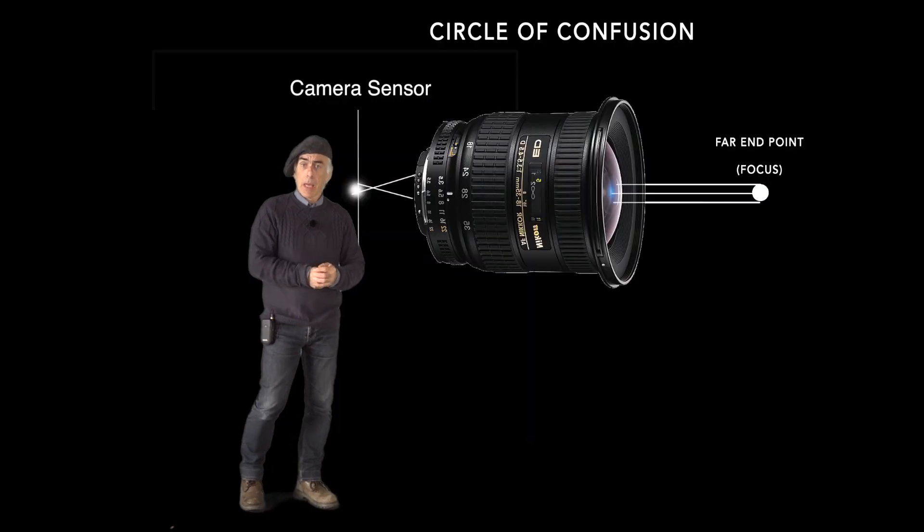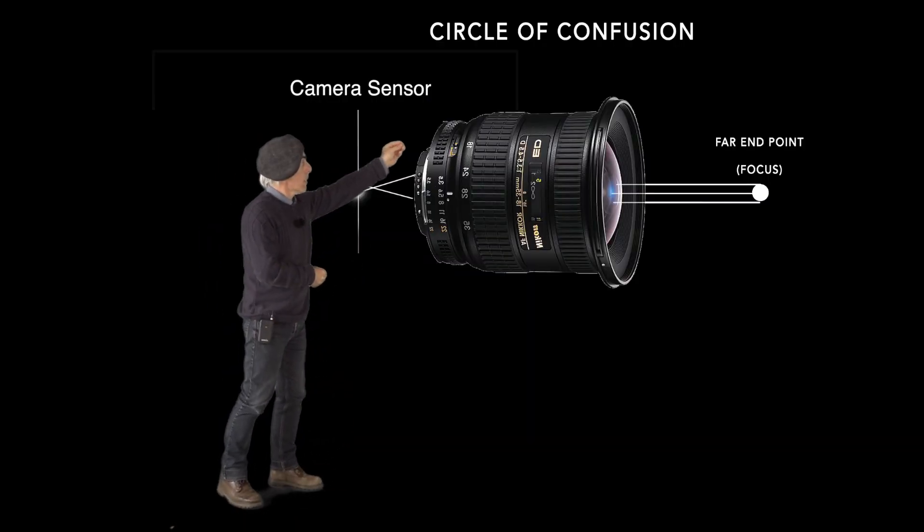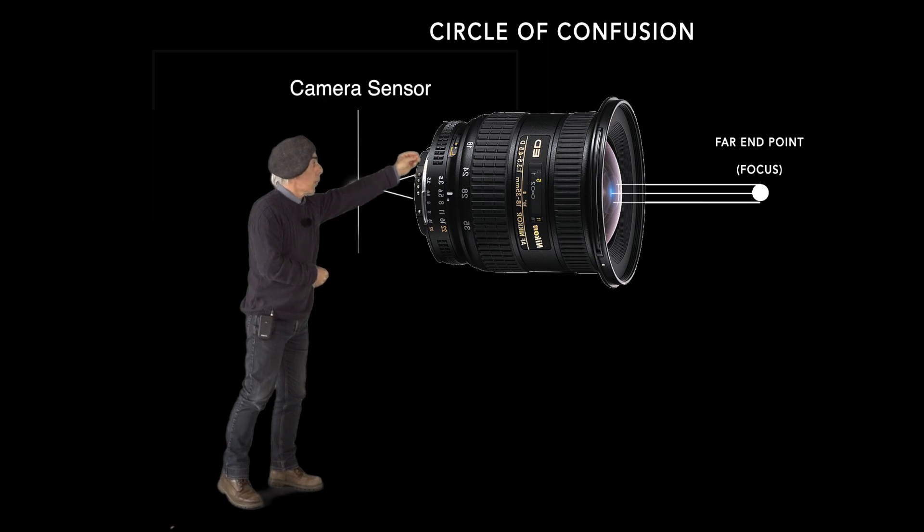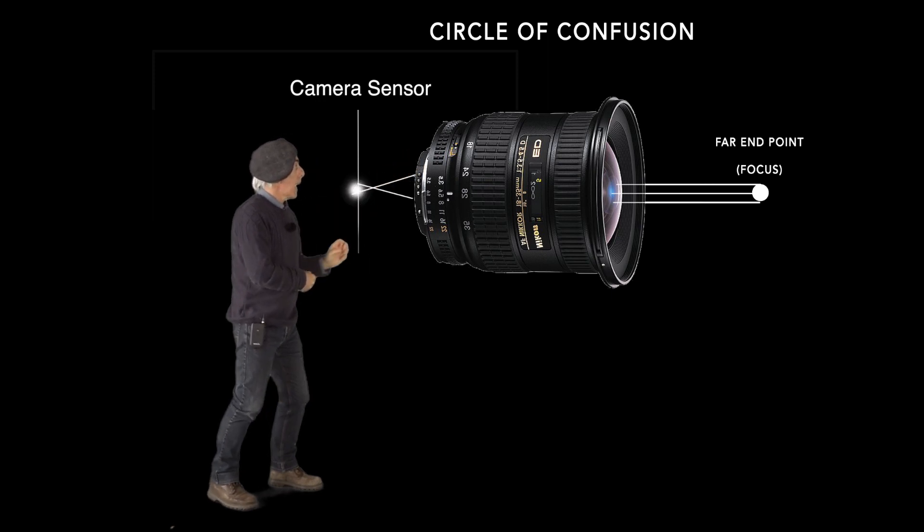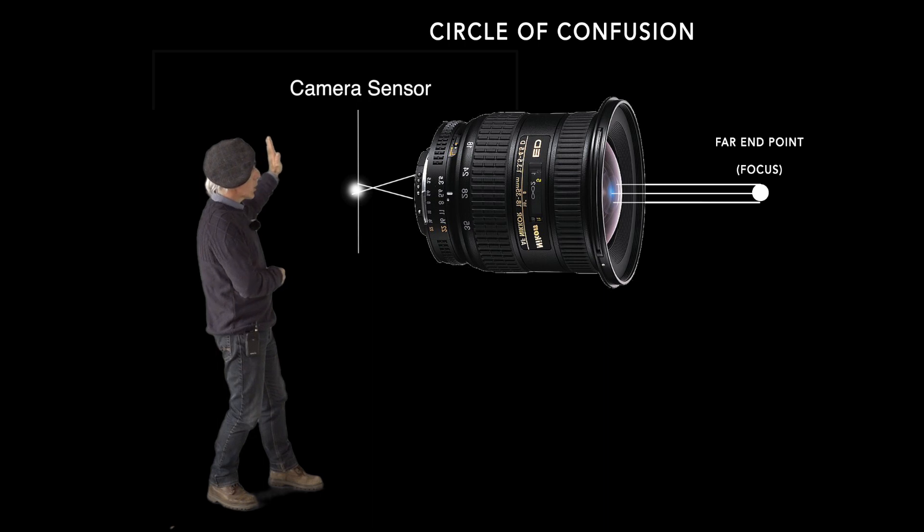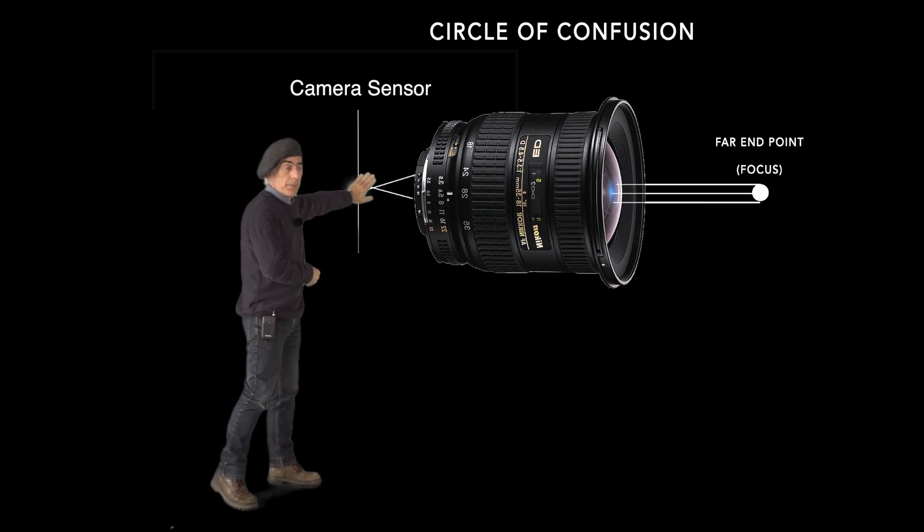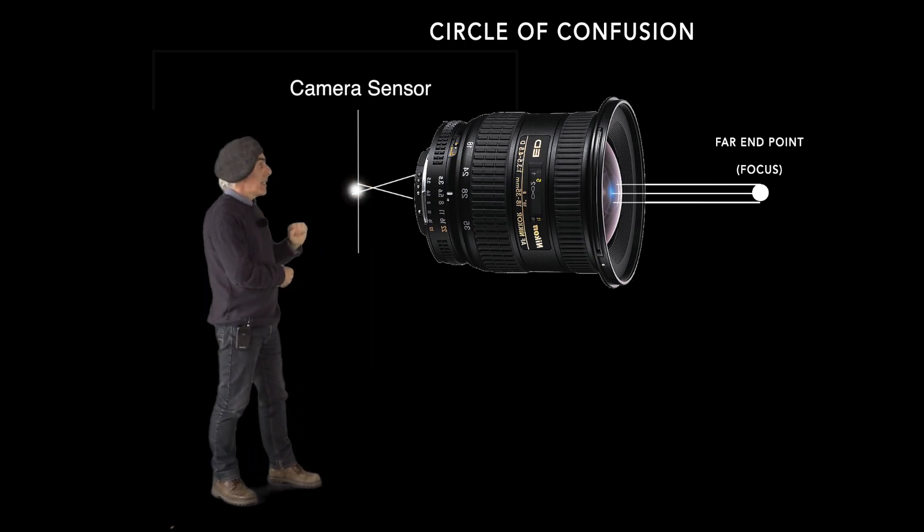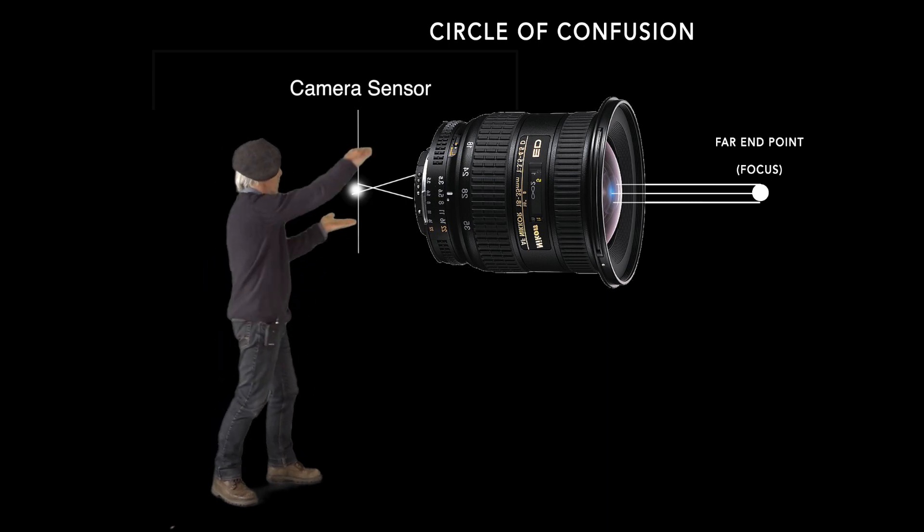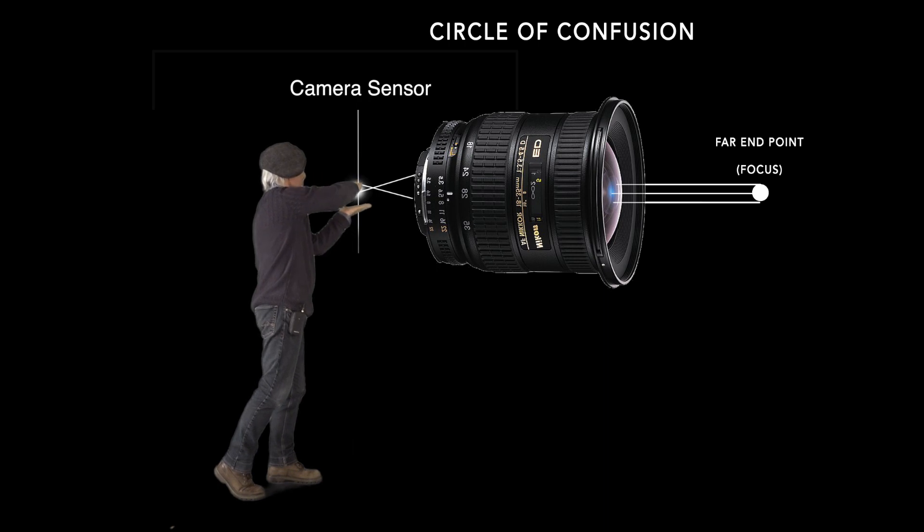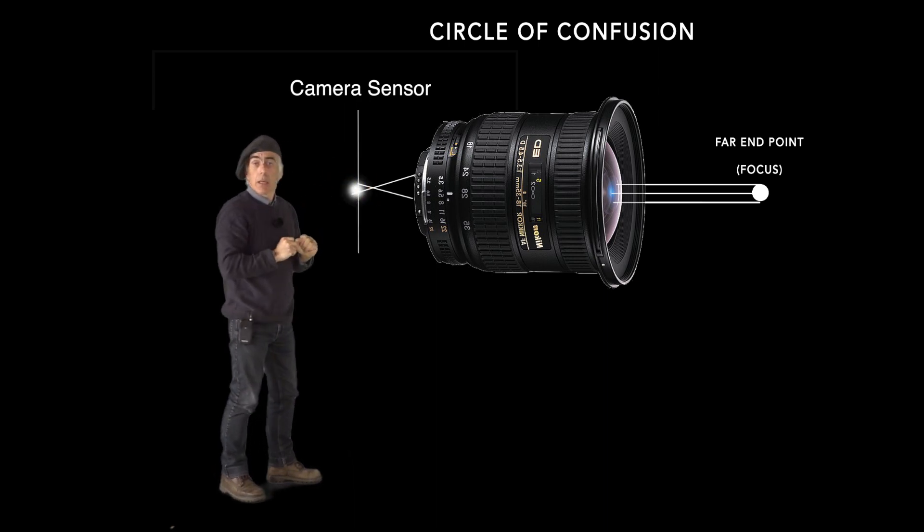If we focus on a very specific point with a camera and we have the focus point on the sensor, then that far end point where we have focused on, that light will travel through the lens. Because of the imperfections of the lens, the light rays will be bundled at a certain point.